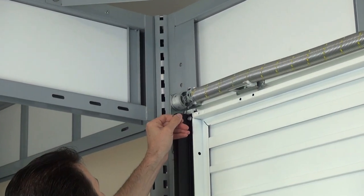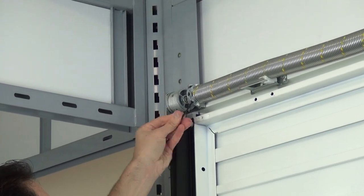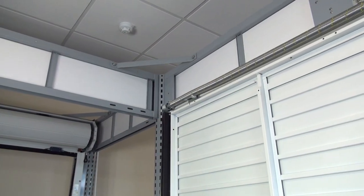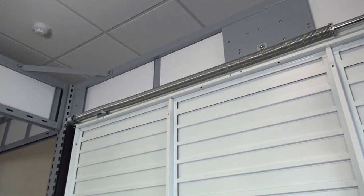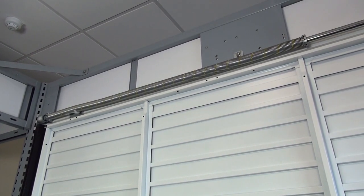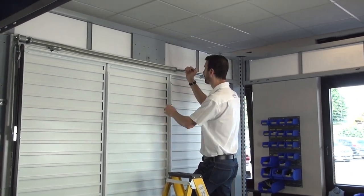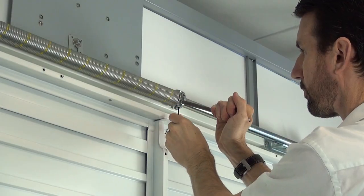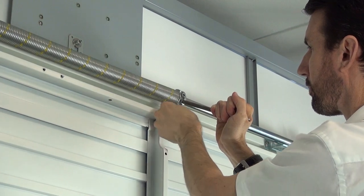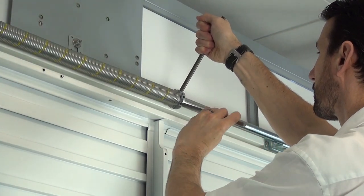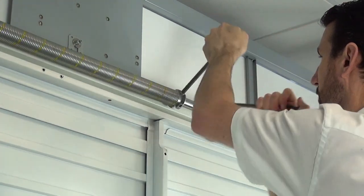Next, lock off the grub screws on the left hand side of the torsion spring. This locks the spring in a safe position to adjust the tension on the spring. Using the tensioning bars to hold the spring in place, use an Allen key to undo the grub screws. Then apply two more turns to the torsion spring using the tensioning bars.